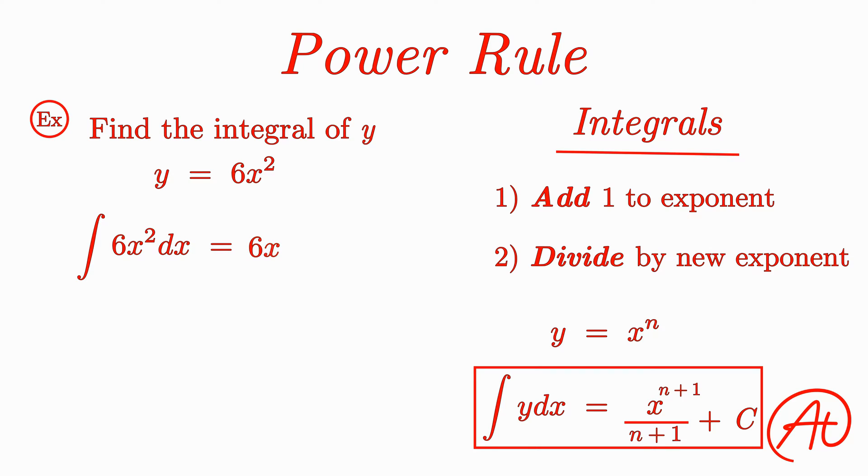Following the power rule, we would first add 1 to the exponent to get 3, and then divide by this new exponent to get 6x cubed divided by 3. But as always, don't forget to tack on your plus C. Finally, we can simplify the 6 and 3 from this result to get our final antiderivative of 2x cubed plus C.